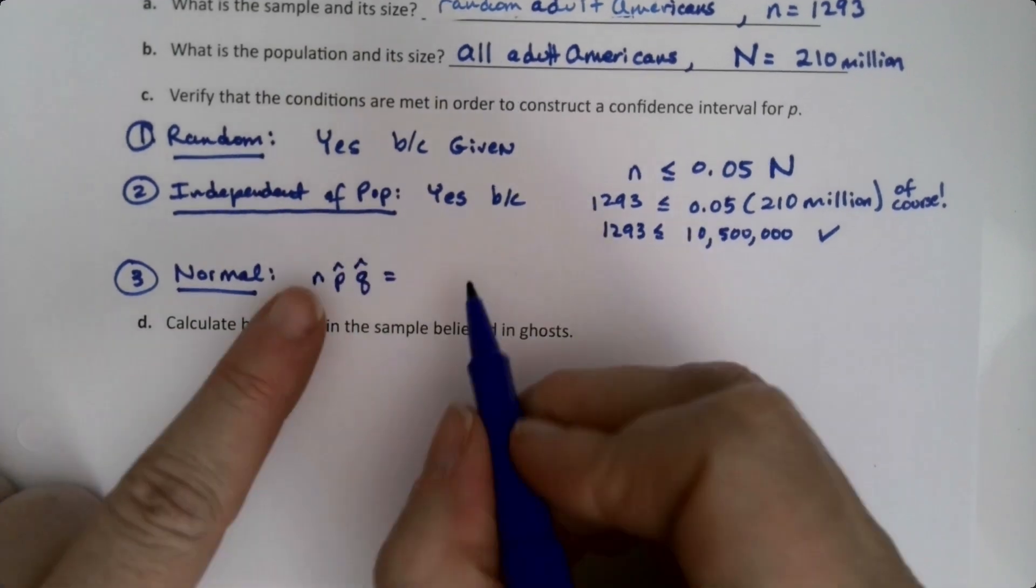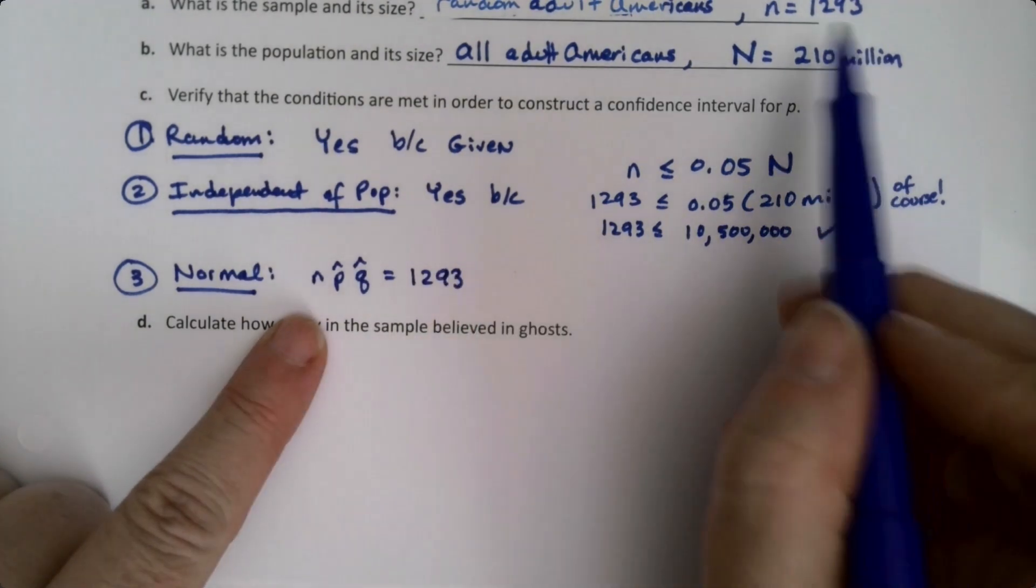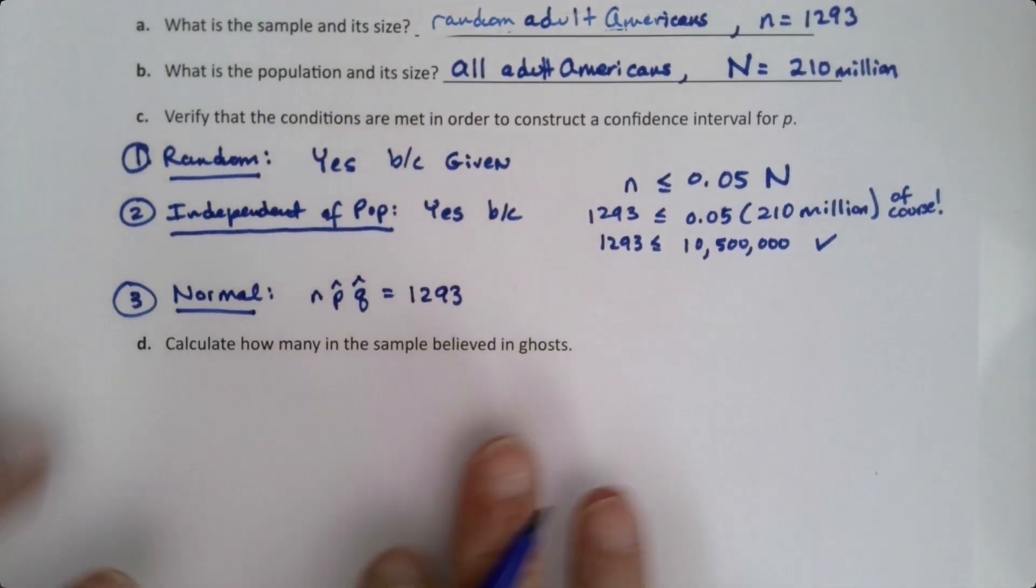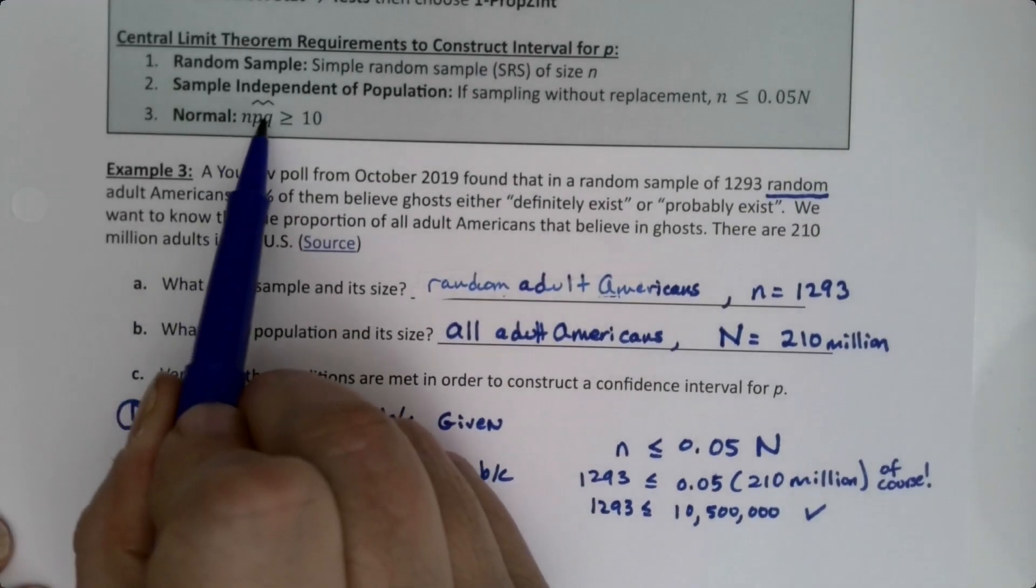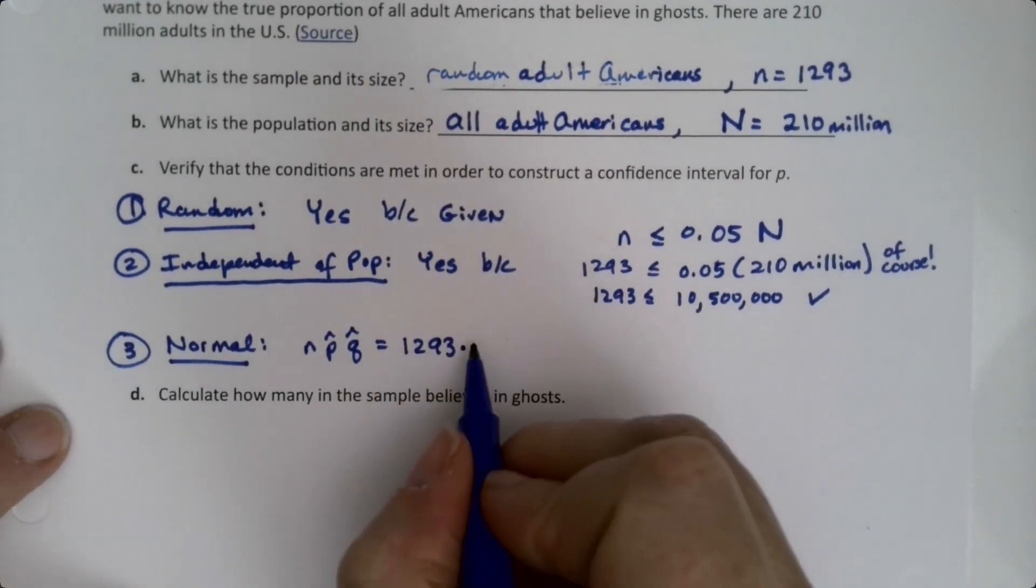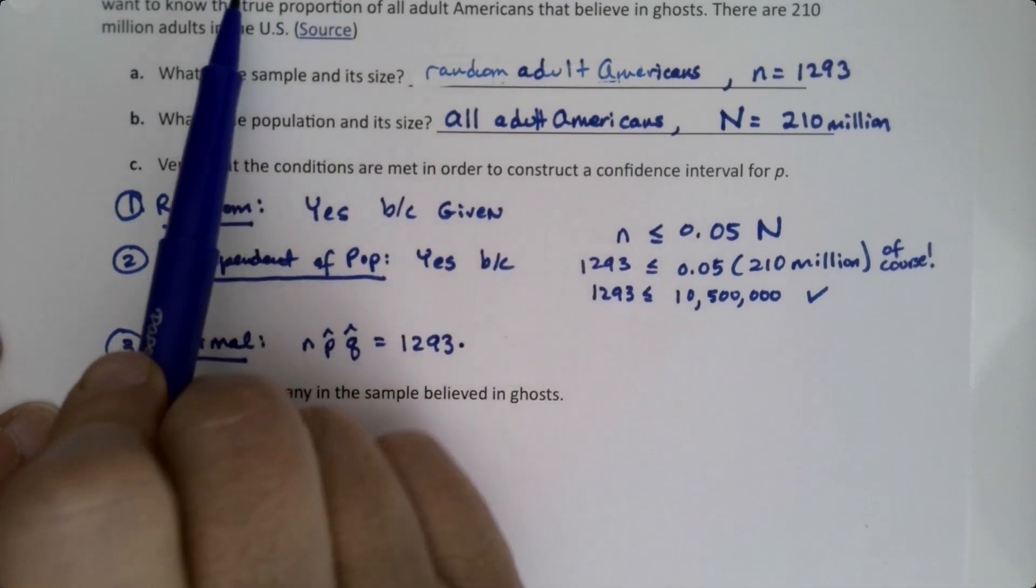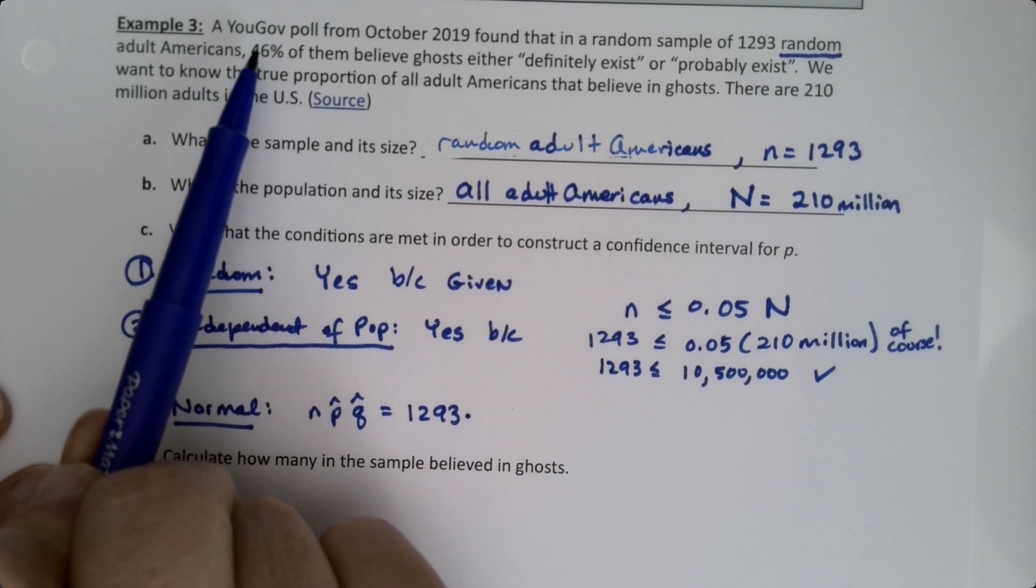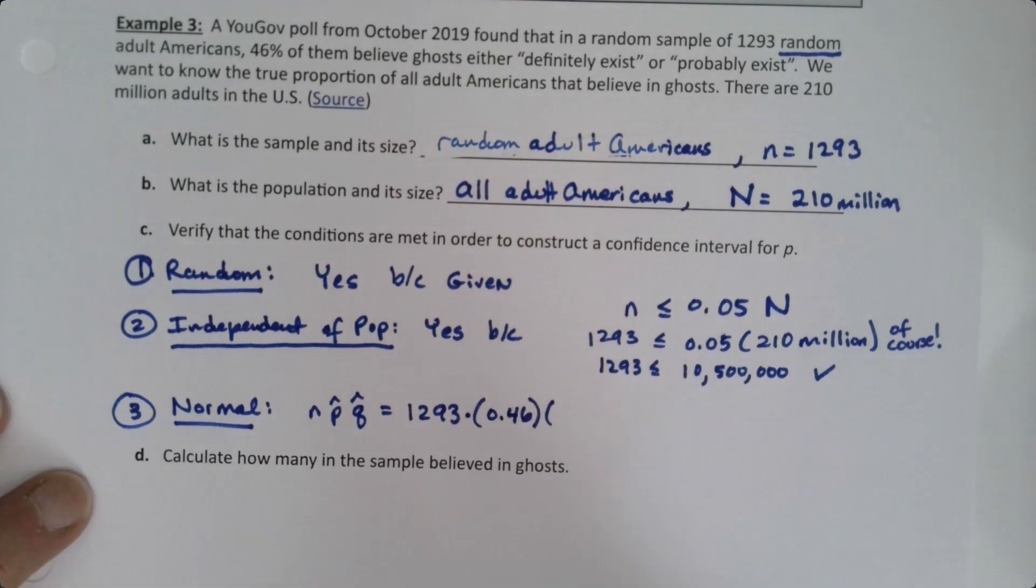Last one is the normal condition. I need n·p̂·q̂ to be greater than or equal to 10. n is little n, which is 1293. Now, math people imply a lot—NPQ like this implies multiplication. P hat is the proportion of success from our group, which is 0.46.